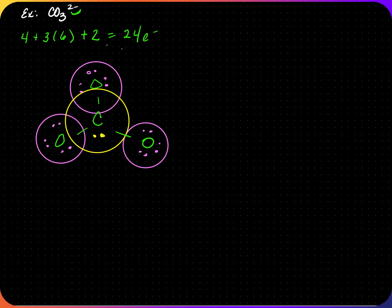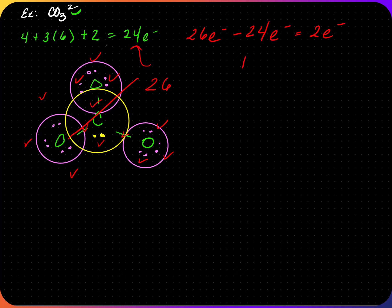If I count all the electrons, the Lewis dot structure has twenty-six electrons, which does not match the valence electron count of twenty-four. Therefore this structure is incorrect. The Lewis dot has twenty-six electrons minus the valence electron count of twenty-four — there are two extra electrons, which means there is one extra bond.